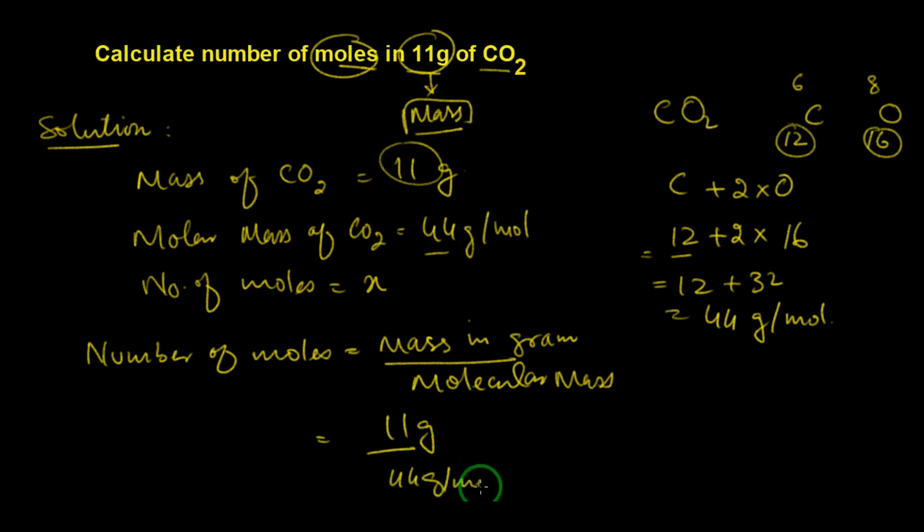When we divide, grams will cancel out, so 11 divided by 44 will give 0.25.